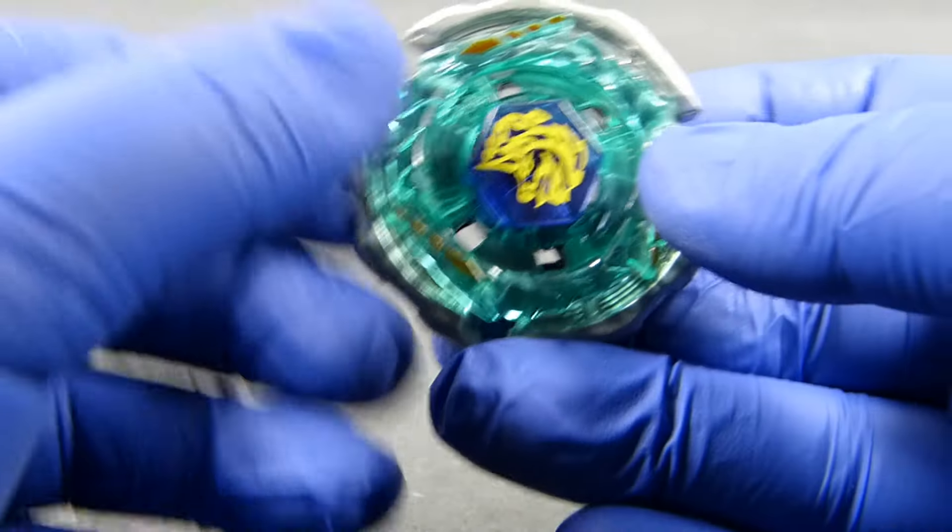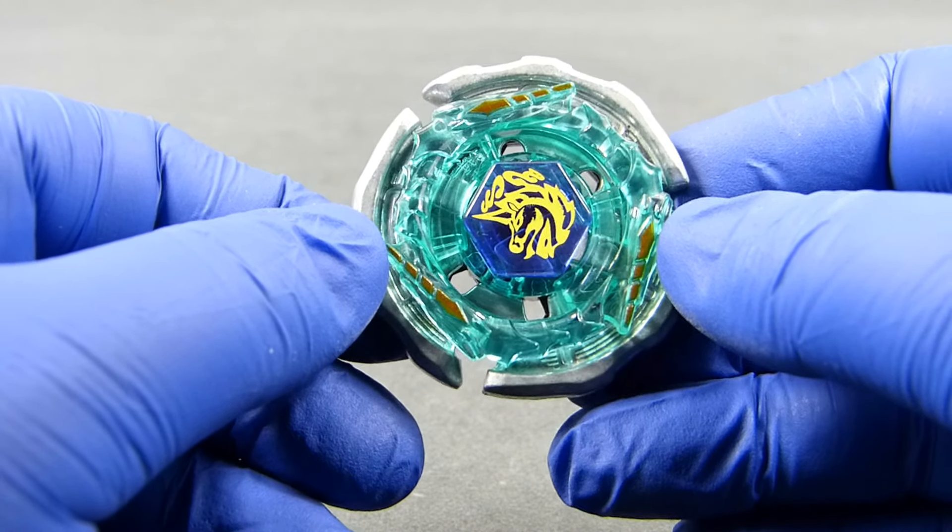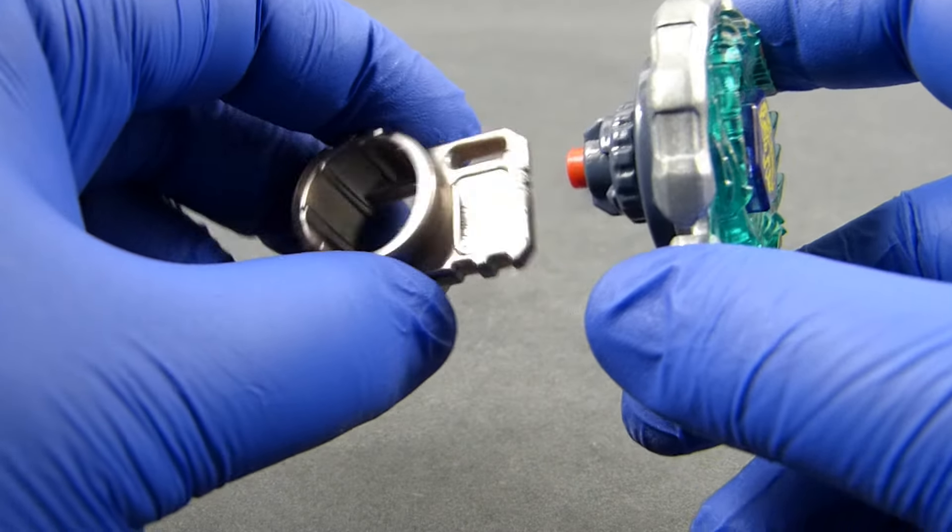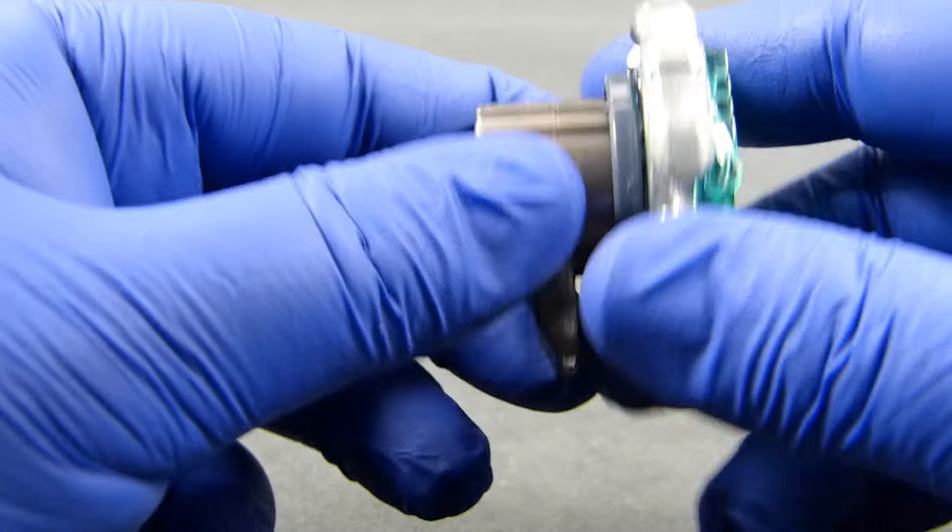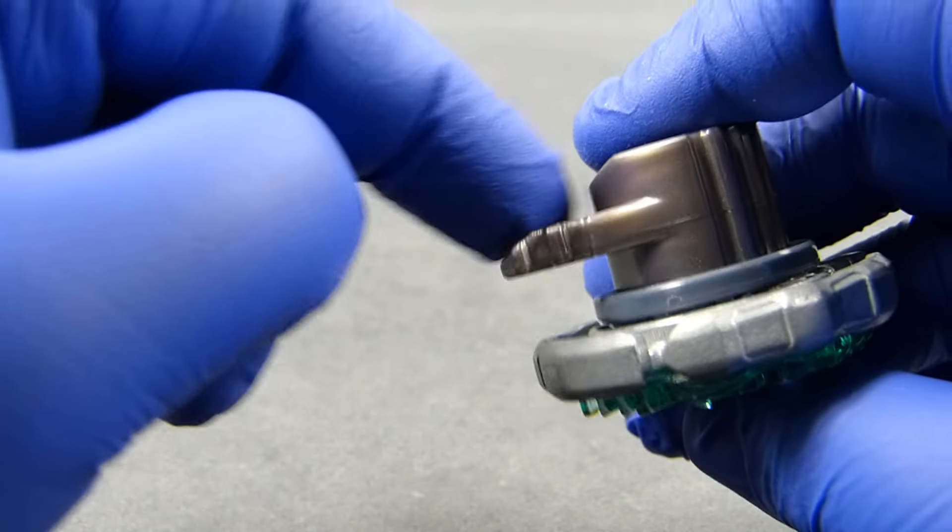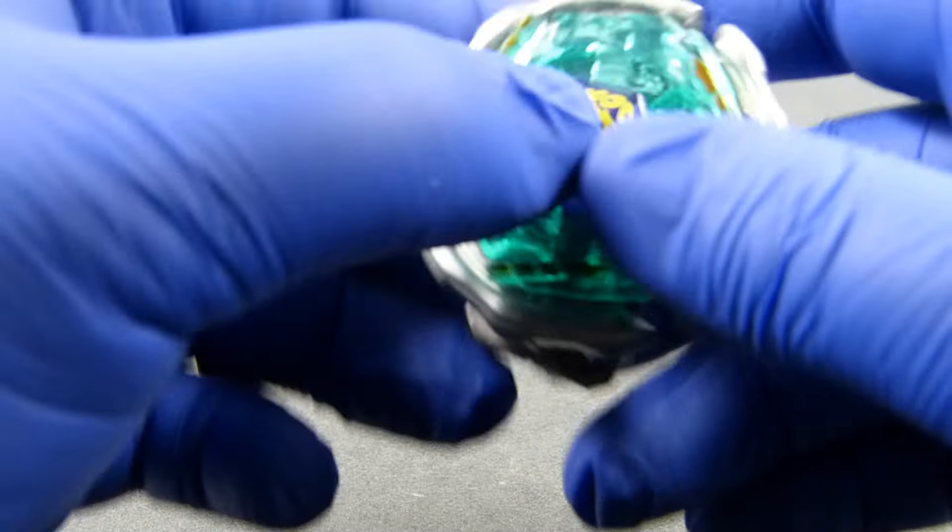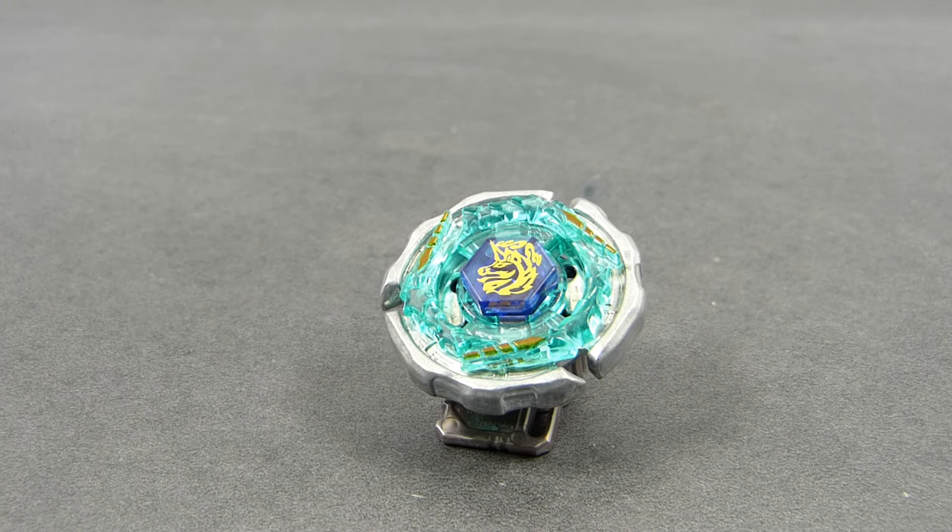And this way our Bey is now assembled. And if we want to put it on a shelf for it to look pretty, I again use the side for the spin track. And as you can see, there's a small cutout in the assembly tool which works as an angled stand. And this is how I like to display my Beys.